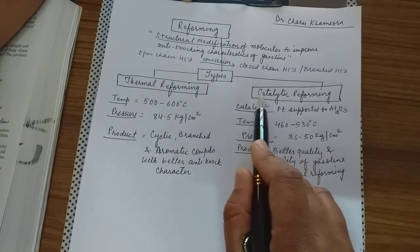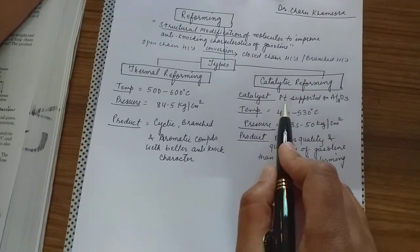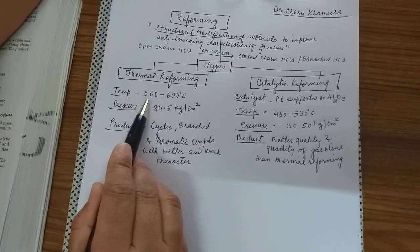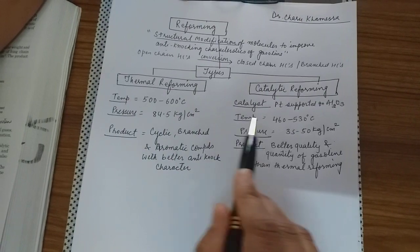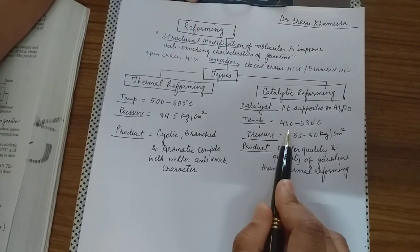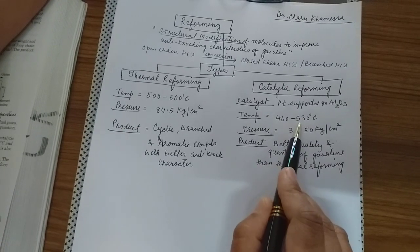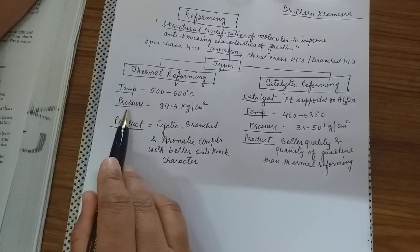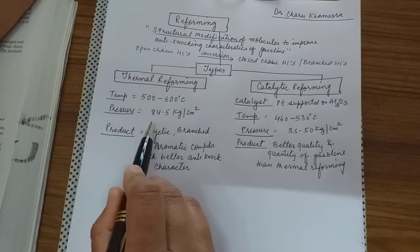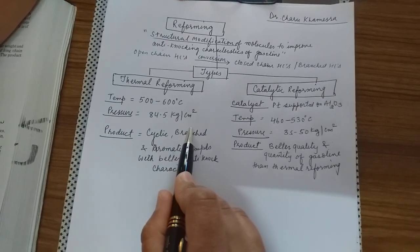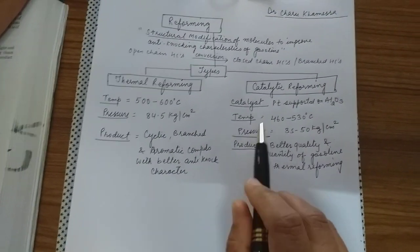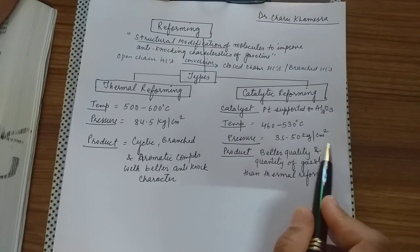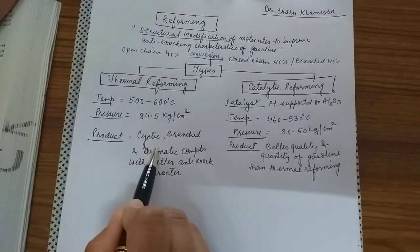The catalyst used in catalytic reforming is platinum supported on alumina. The temperature condition in thermal reforming is 500 to 600 degrees centigrade, while in catalytic reforming it is 460 to 530 degrees centigrade — lesser conditions due to the presence of catalyst. The pressure used in thermal reforming is 84.5 kg per centimeter square.